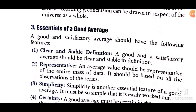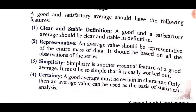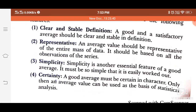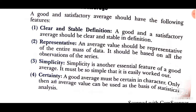Now: essentials of a good average. What do we need to calculate the average? Why is this important? First: clear and stable definition. A good and satisfactory average should be clear and stable in definition so we get proper information from the particular data. Second: representation. An average value should be representative of the entire mass of the data; it should be based on all the observations of the series. Third: simplicity. It is another essential feature of a good average — it must be simple, easily worked on, easy to calculate and easy to study.